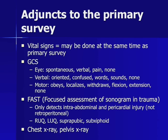The FAST scan may also be performed at this time. FAST stands for Focused Assessment of Sonogram and Trauma. It uses ultrasound technology to detect intra-abdominal and pericardial blood, but cannot detect retroperitoneal blood. There are four views: right upper quadrant, left upper quadrant, suprapubic, and subxiphoid. Chest and pelvis x-rays are used to detect major injuries in those regions.